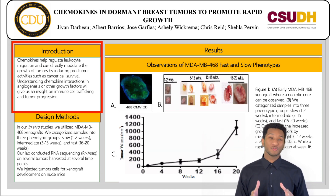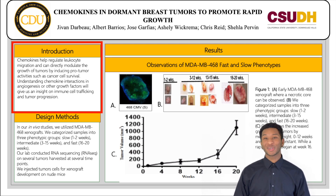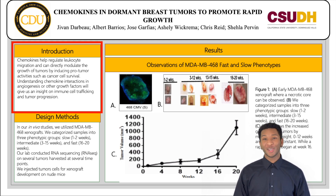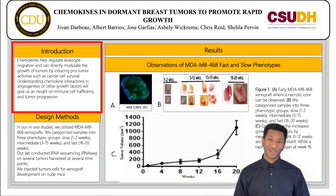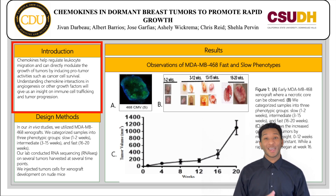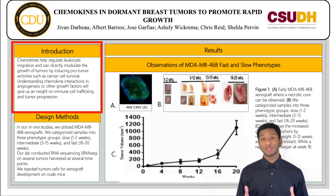Chemokines mediate the host response to cancer by directing the trafficking of leukocytes into tumor microenvironments. They can also directly modulate the growth of tumors by inducing the proliferation of cancer cells and preventing their apoptosis. They are essential coordinators of cellular migration and cell-to-cell interactions, and therefore have a great impact on tumor development. Chemokines and their receptors have been implicated as important regulators of tumor angiogenesis and have been described to have a dual function in tumor blood vessel formation.